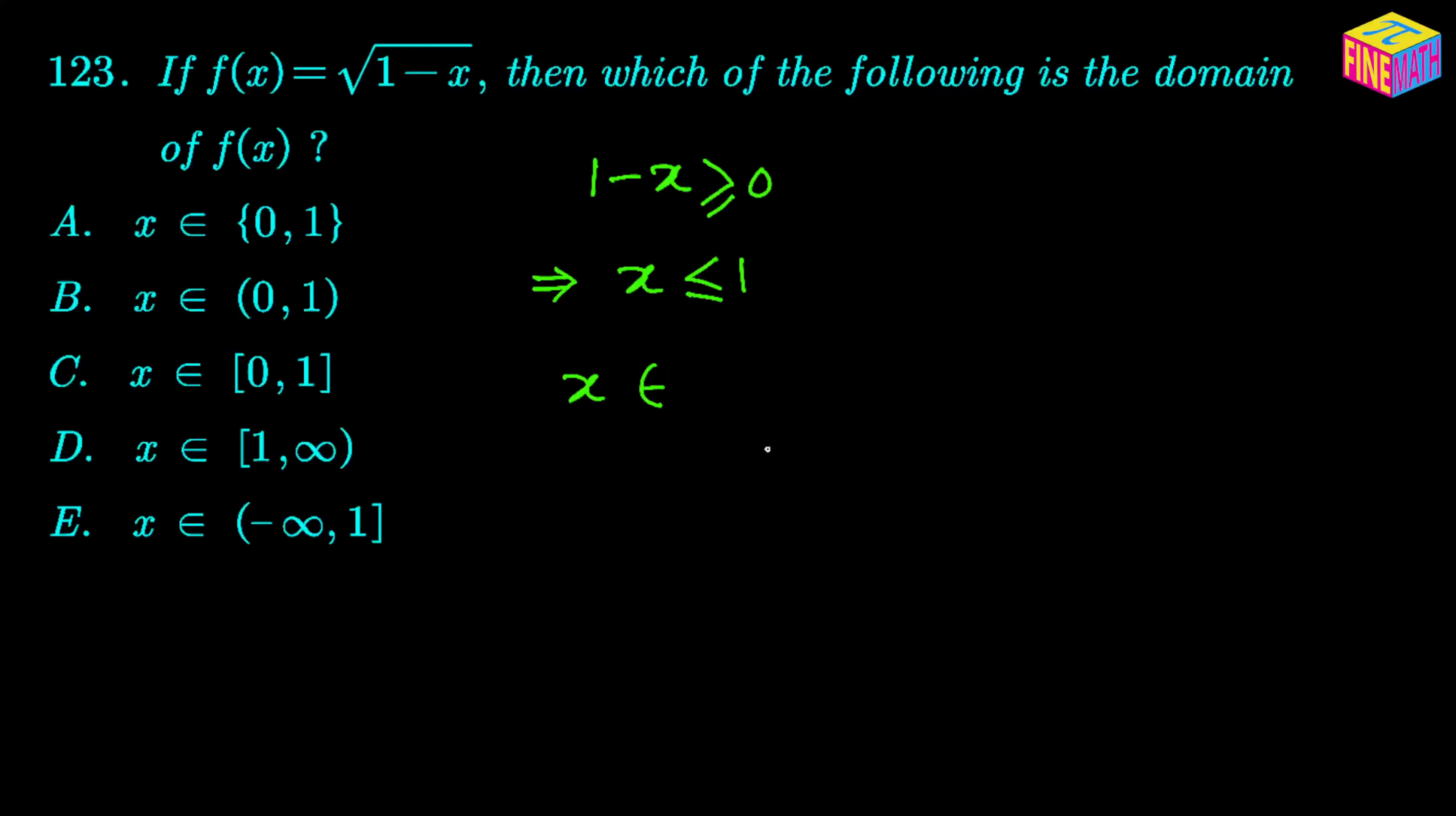Using the interval notation we can say it would be less than 1, so 1 would be on the right hand side and 1 is included so we can use the bracket there. And then on the left hand side it will be negative infinity, and that is our answer.